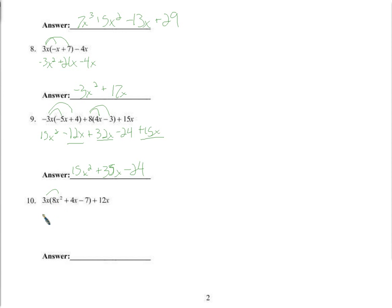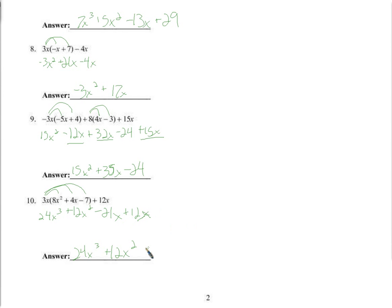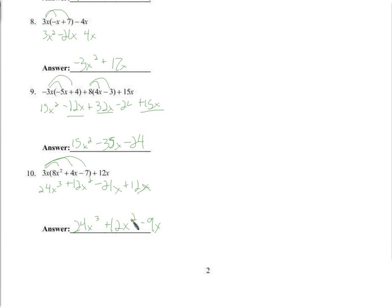Distributing the 3x gives us 24x cubed plus 12x squared minus 21x plus 12x. Combining like terms: only one x cubed term — 24x cubed. Only one x squared term — 12x squared. And negative 21x plus 12x is minus 9x. That is the last one. Thank you for watching — I hope that was helpful. Let me know if you have any questions.